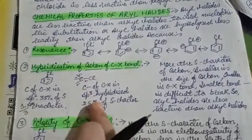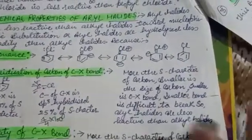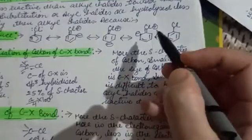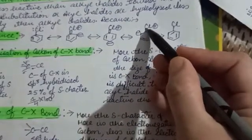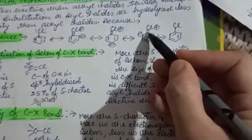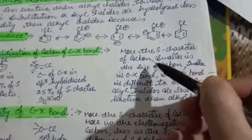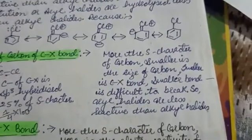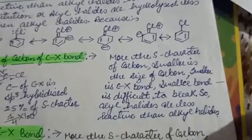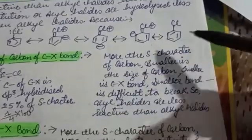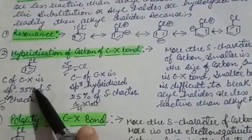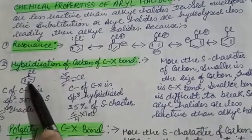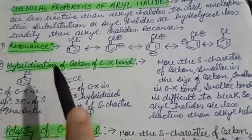In SP2, the S character is 33%. When S character becomes more, the size of carbon becomes smaller. When the bond between carbon and chlorine becomes smaller, a smaller bond is more difficult to break. So in this case, the bond is difficult to break. But in alkyl halide the bond is easily broken. This is why aryl halide is less reactive and alkyl halide is more reactive.